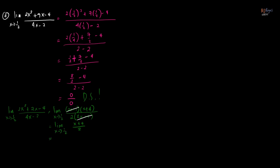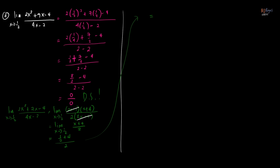Substituting 1/2 for x: we get (1/2 + 4) over 2. Now, 1/2 plus 4 equals 9/2. So we have (9/2)/2, which equals 9/2 times 1/2 — dividing fractions by multiplying by the reciprocal — giving us 9/4. The limit of (2x² + 7x - 4)/(4x - 2) as x approaches 1/2 is 9/4.